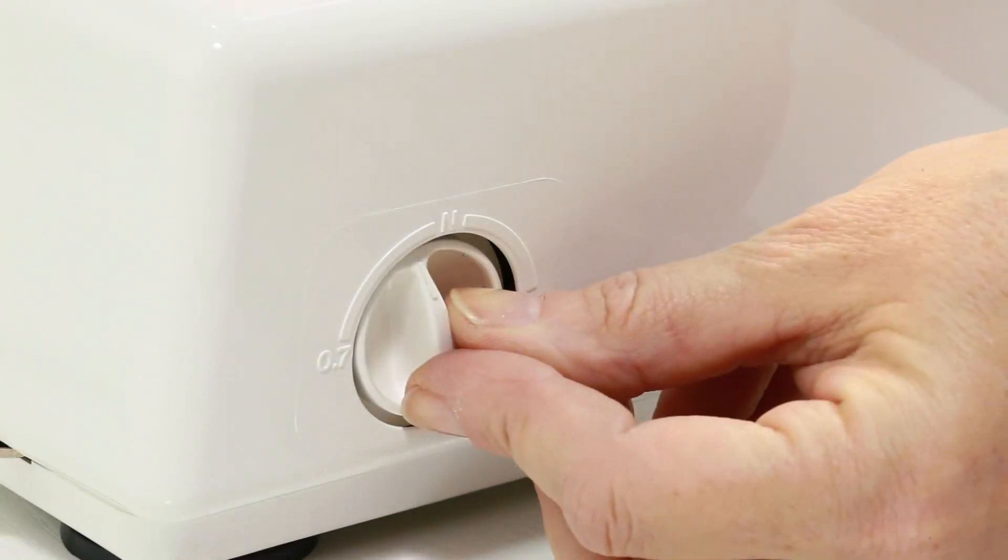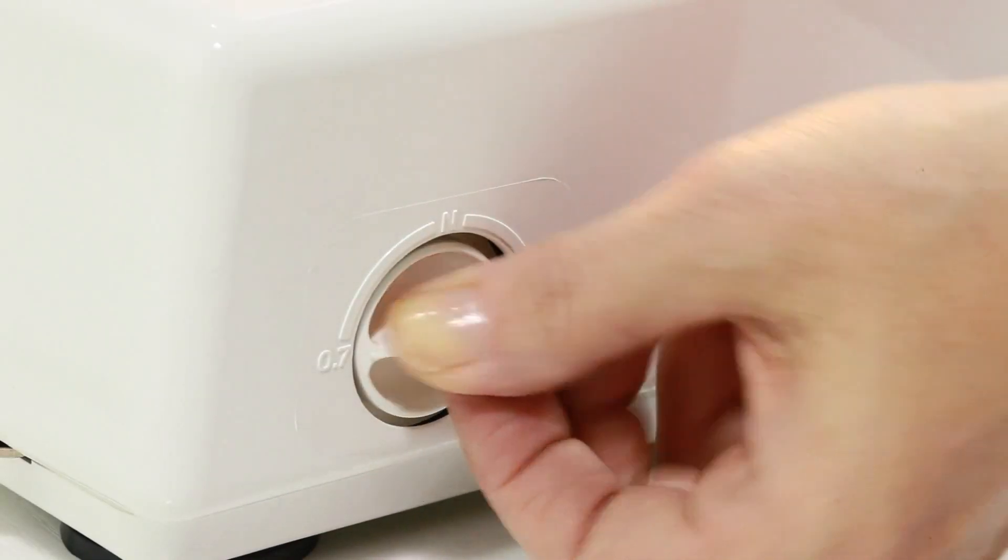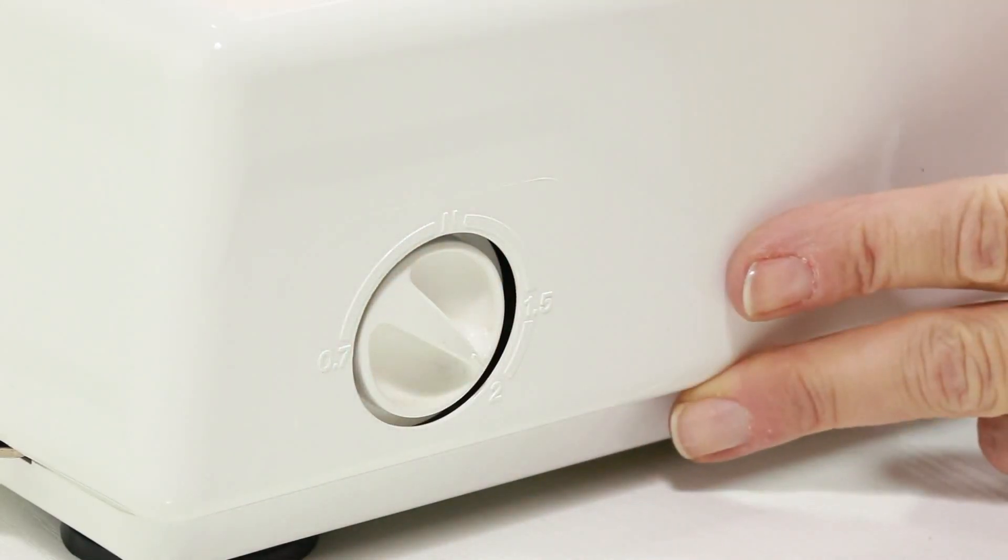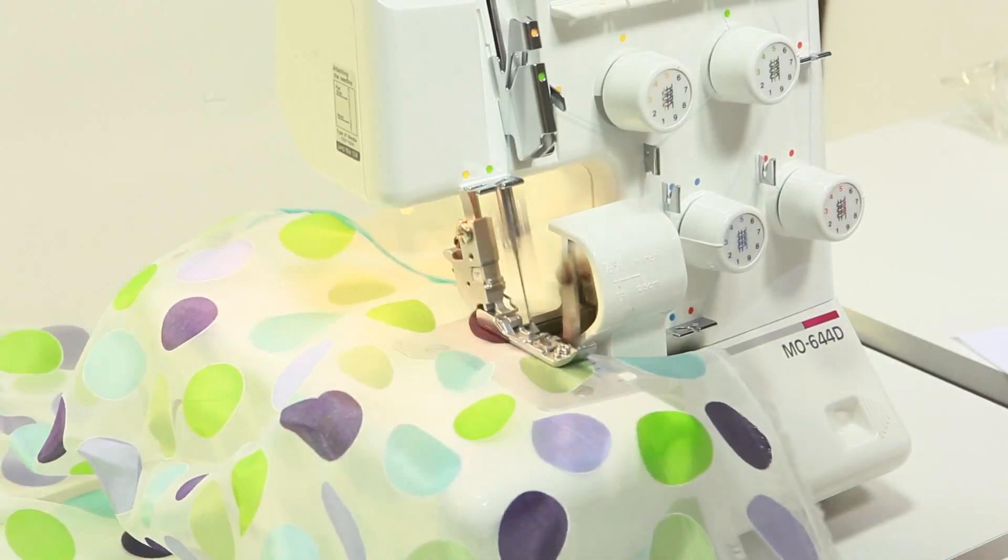Want to control your gathers? Either remove gathers or puckering or add more gathers to create ruffles. Use the differential feed on the Juki M0644. Create perfect rolled hem edges simply by flipping a switch.